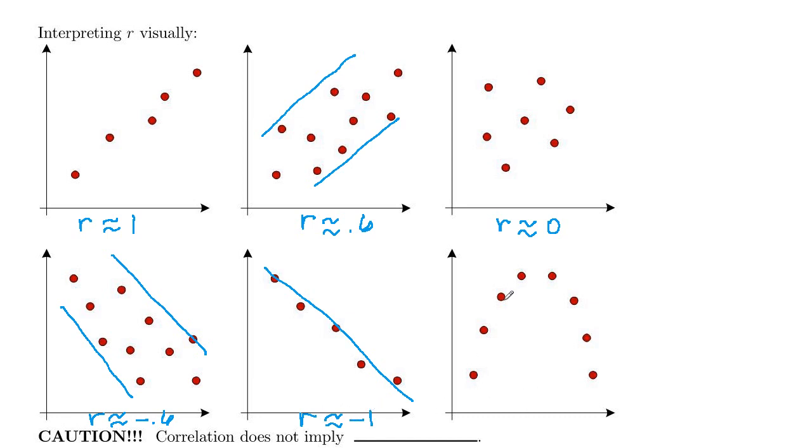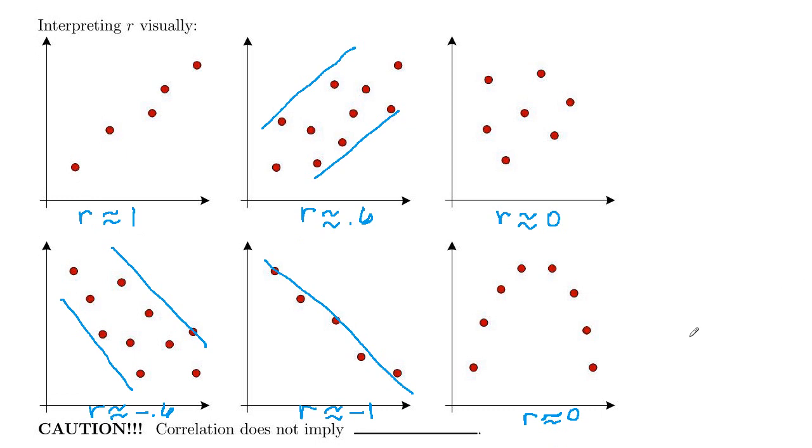And then here, you have a definite relationship. But it looks like an x squared curve, a quadratic, not a line. So in this case, you would also have R is approximately 0. Because the correlation coefficient only measures the strength of a linear relationship.